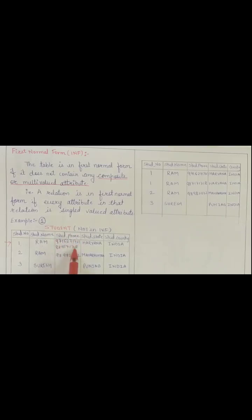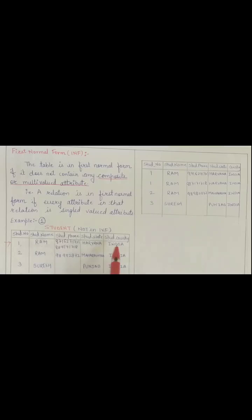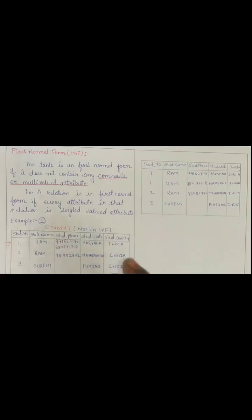More than one value are present in this student phone attribute. Student state is single-valued, student country is single-valued. That's why here we say this is not in 1NF, as any one of the attributes here is containing multi-valued values, and this violates the rule of 1NF. The rule of first normal form is: the relation must not contain any composite or multi-valued attribute. That's why this table is not in 1NF.